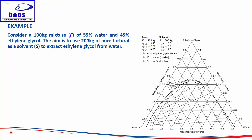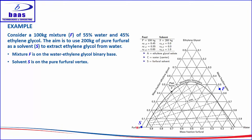Let's conclude by looking at a calculation example. Consider a feed F of 100 kg consisting of 55% water and 45% ethylene glycol. The aim is to use 200 kg of pure solvent S — furfural — to extract ethylene glycol from water. The feed F is located on the water-ethylene glycol binary base, where the water composition reads 55% and the ethylene glycol reads 45% on their respective parallel composition lines. The solvent S is pure furfural, situated at the furfural vertex.